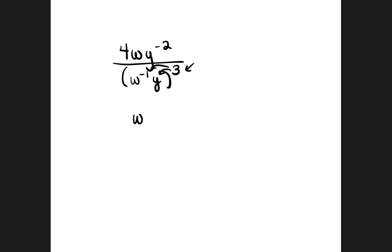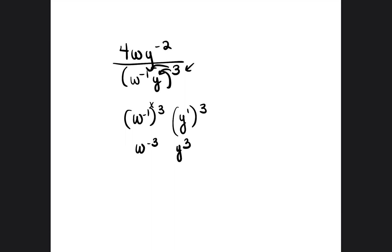So it will be w to the negative 1 times 3, and then y to the 1 times 3. So w to the negative 1 times 3 would be w to the negative 3, and then that would be y to the third.